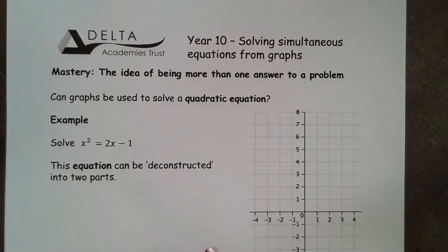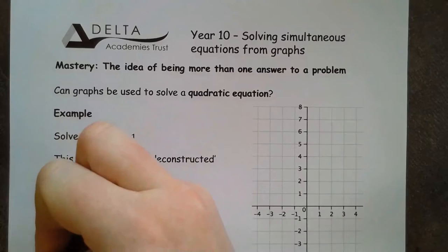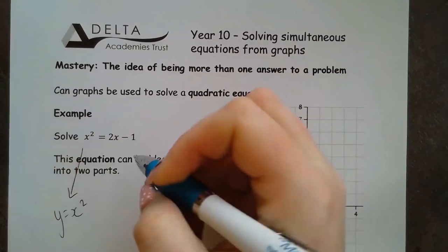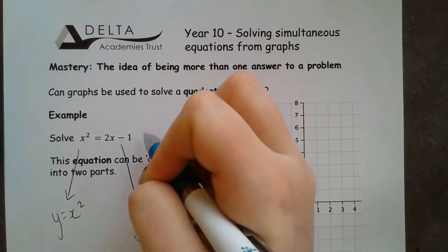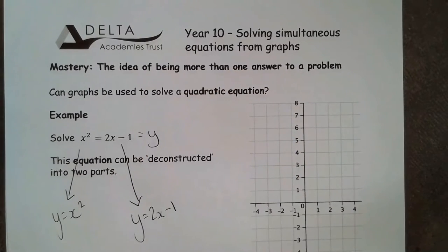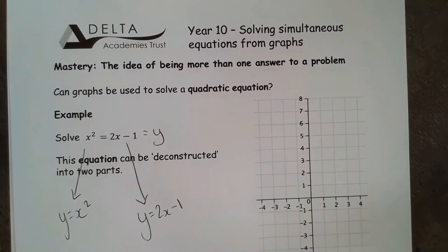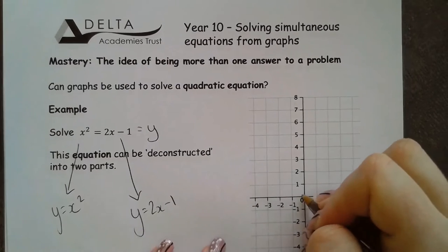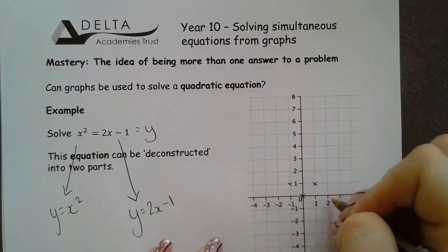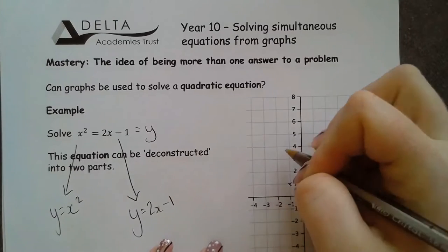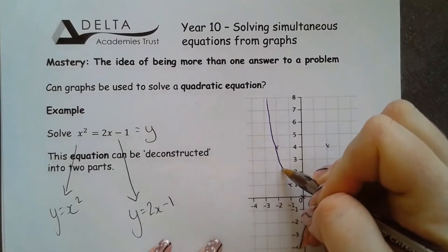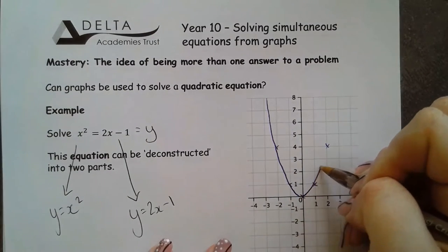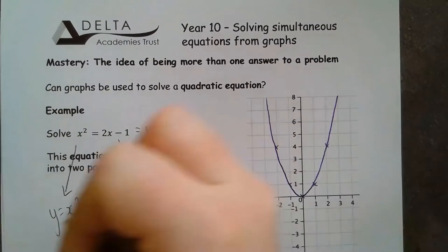I'm going to change this up a little bit by this time drawing y equals x squared but also y equals 2x minus 1 because I'm looking for the places where they are the same. So again I'm going to draw my y equals x squared curve very quickly because we should be in a position where that is quite fast.